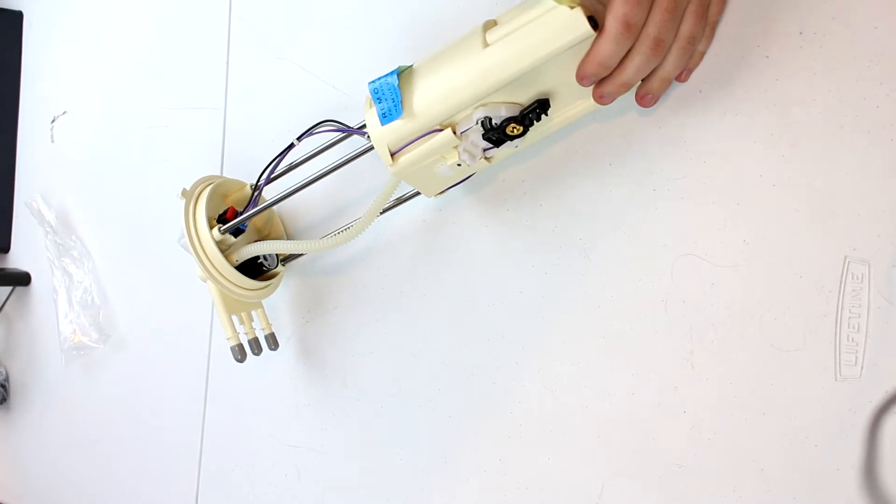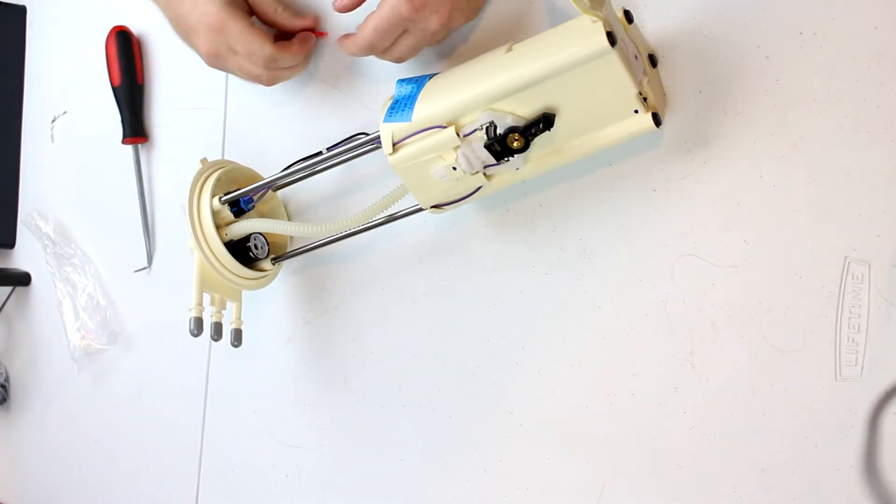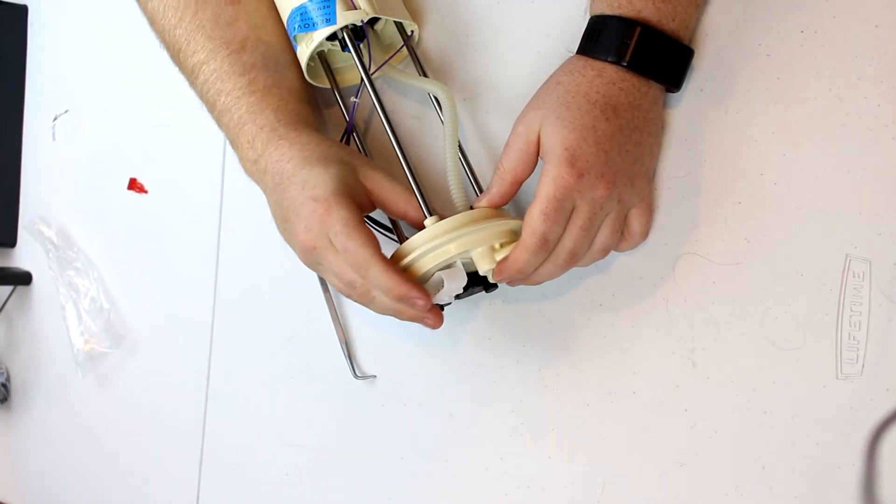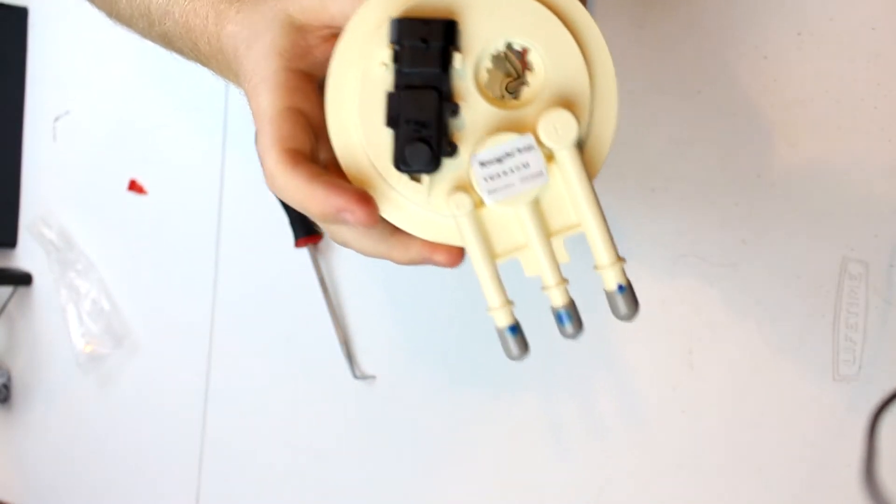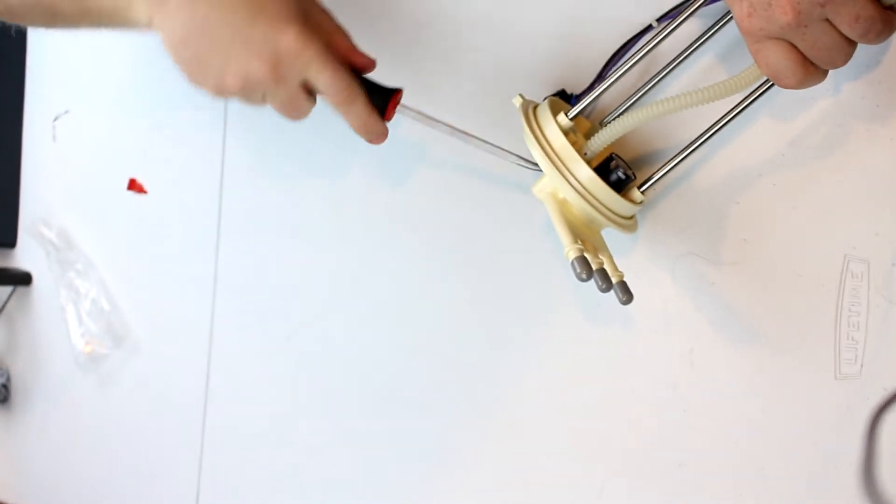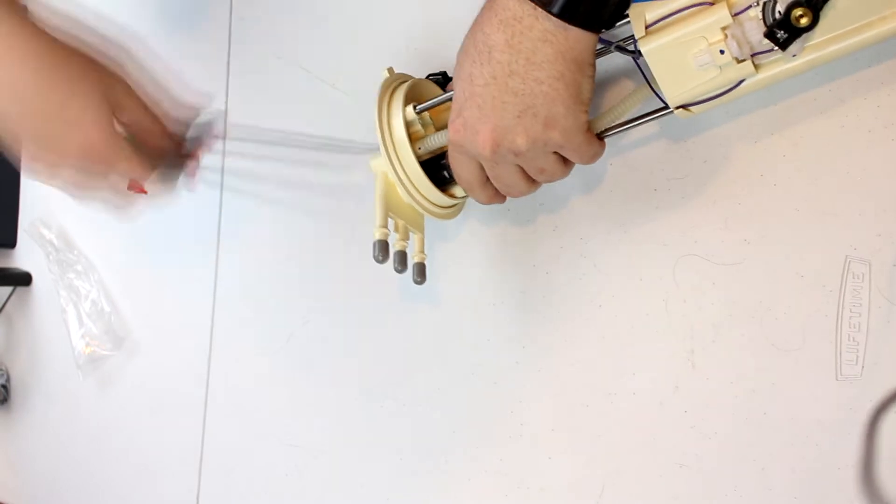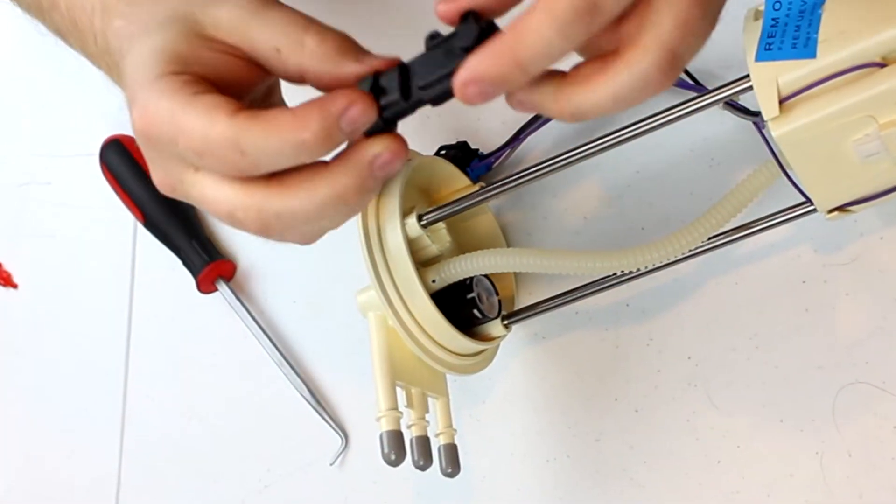I'll start by disconnecting some wires. There's a retainer. That didn't want to come out. That did. I'm not sure what's holding this pressure sensor on but let's see. Just the tension of the gasket. Yep. There's a sensor.